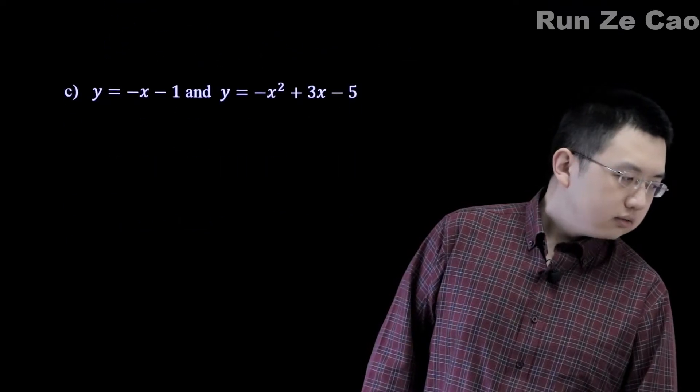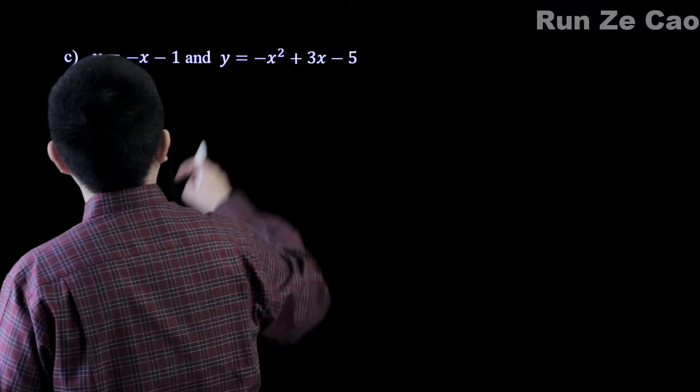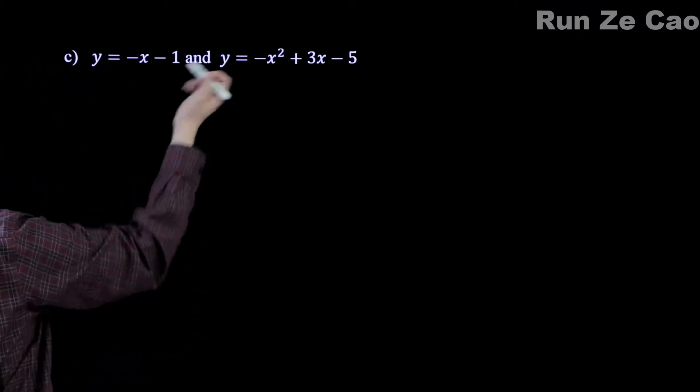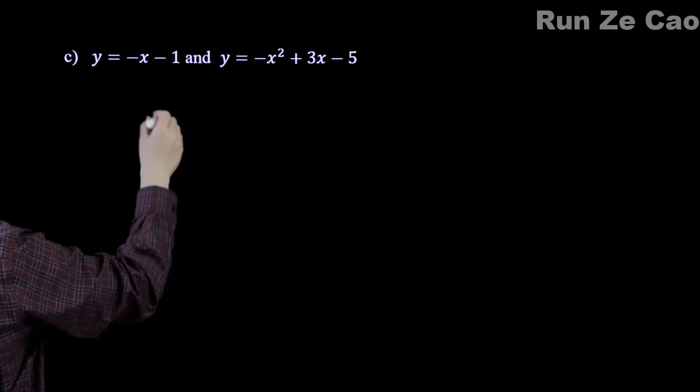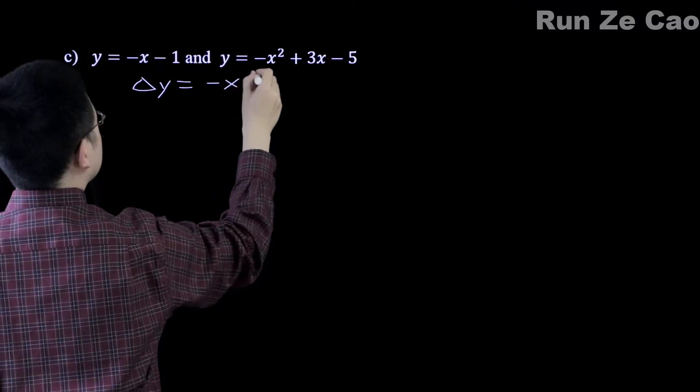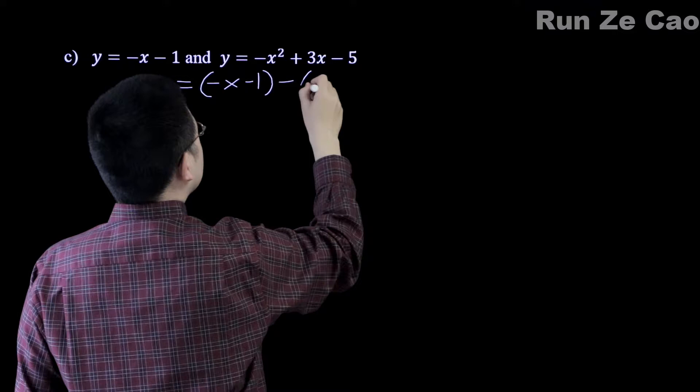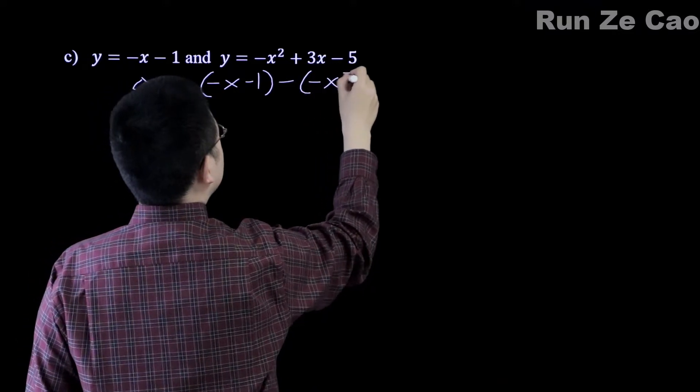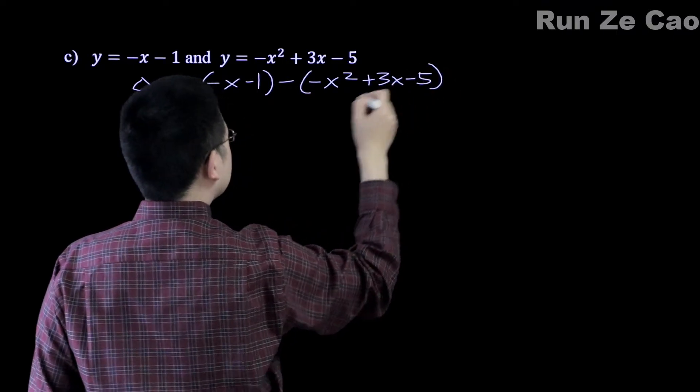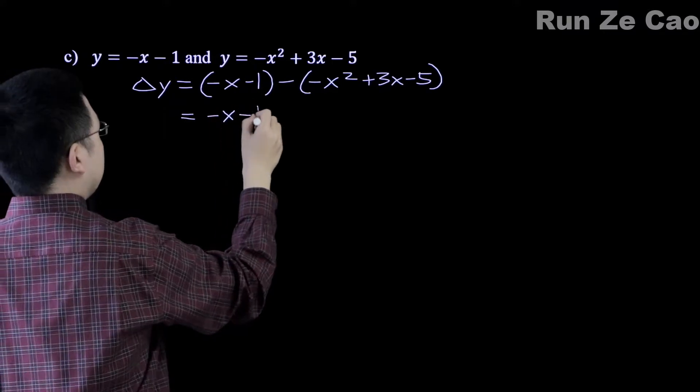Now what about this example here? Here we have a parabola that opens downward. We have a line that slopes downward. How does this actually work out? We'll see soon enough. So delta y is equal to negative x minus 1. Of course you can subtract these in either order, but I'm going to do it this way. Plus 3x minus 5.